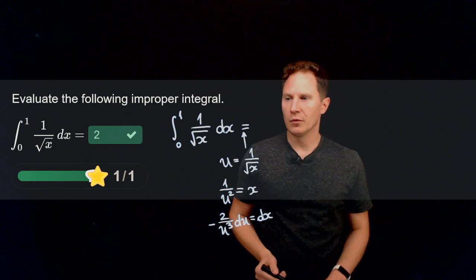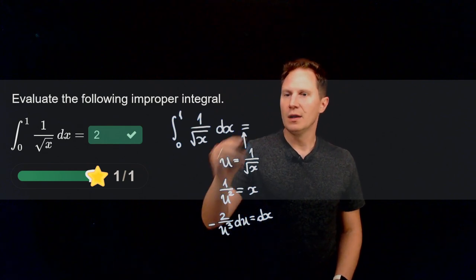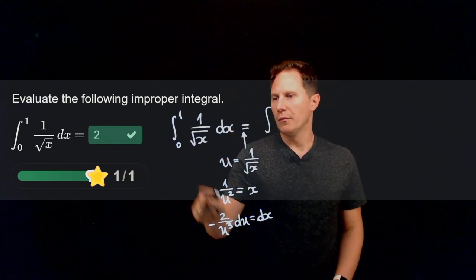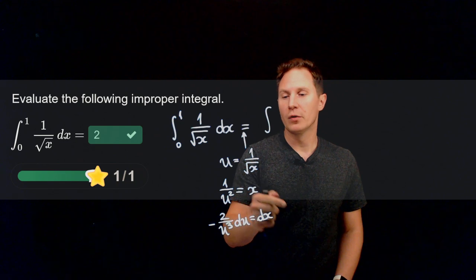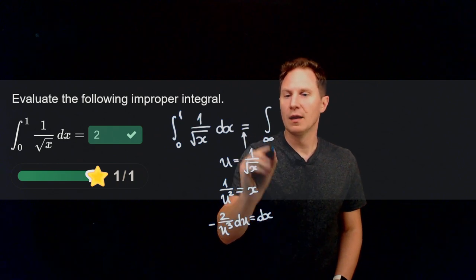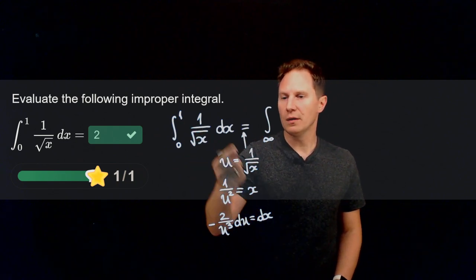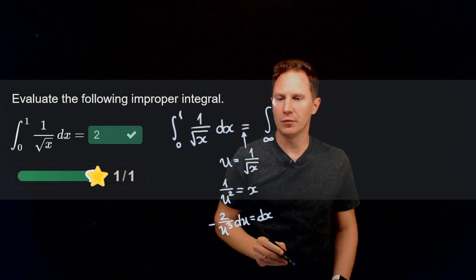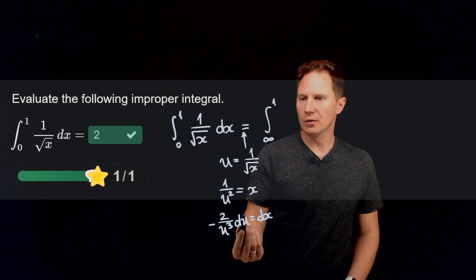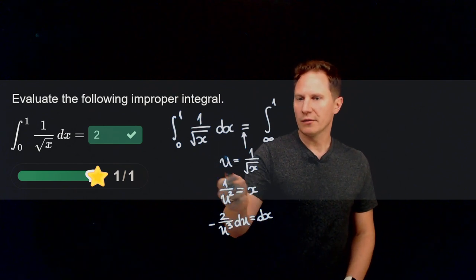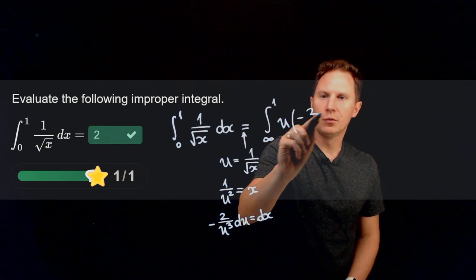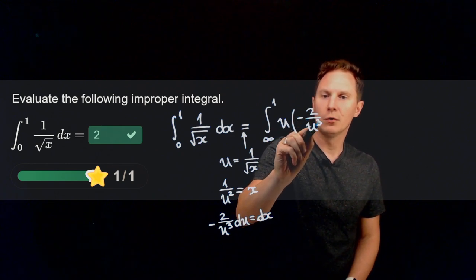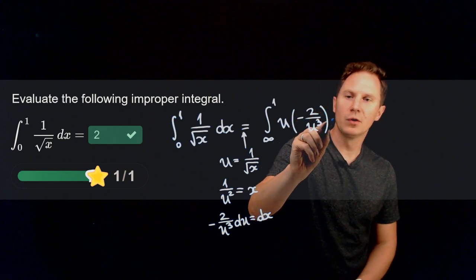Changing the variables in this way means that we are integrating from, well when x is equal to 0, when x approaches 0, u that is 1 over root x approaches infinity, and when x is 1 then we get 1 for the value of u. And then we need to take this integral of 1 over root x, that is just u, times dx, that is negative 2 over u cubed du.